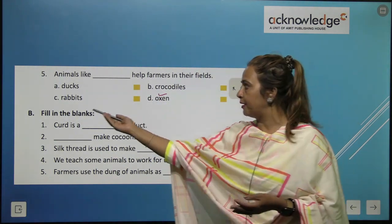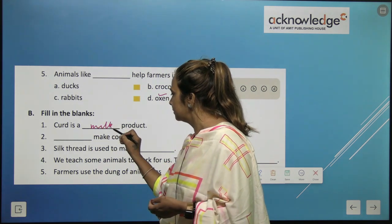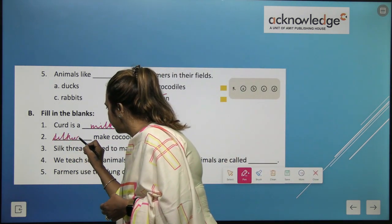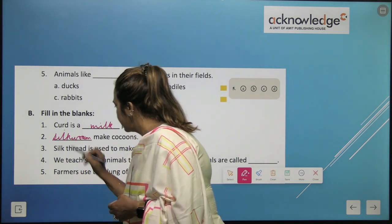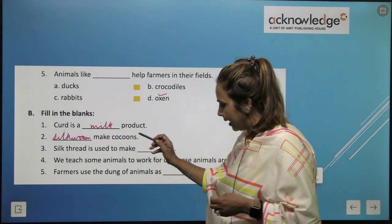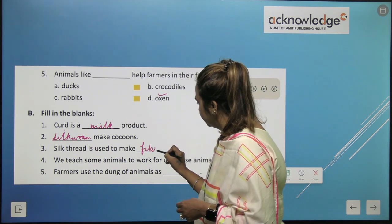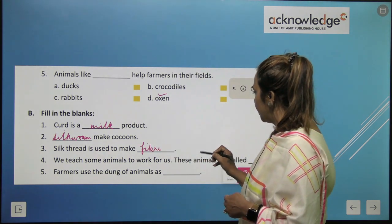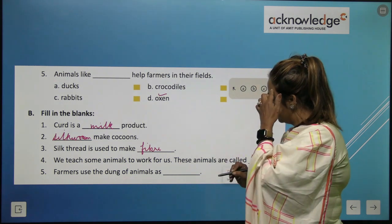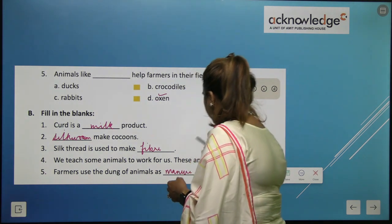Fill in the blanks: Curd is a milk product. Silkworms make cocoons. Silk thread is used to make fiber. We teach some animals to work for us — these animals are called tame animals. Farmers use the dung of animals as manure.